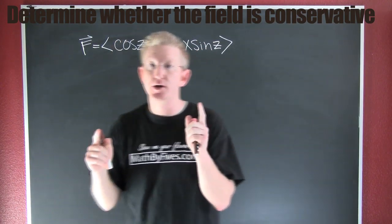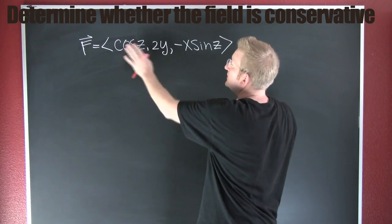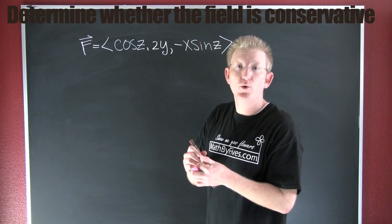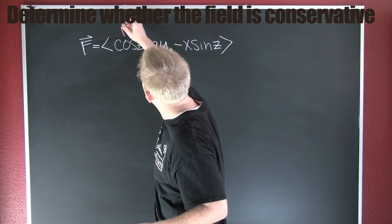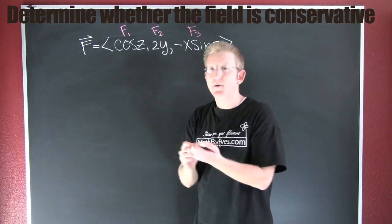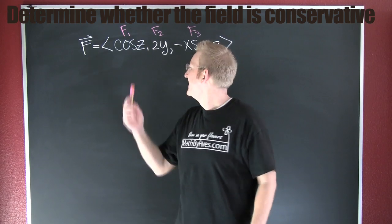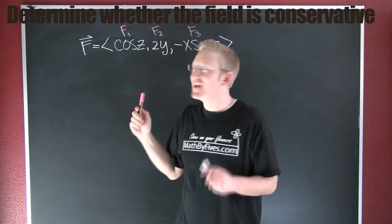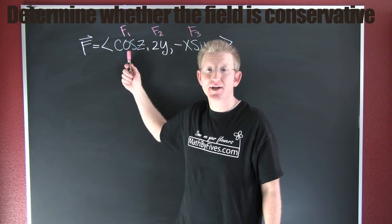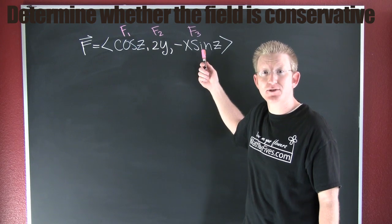What we want to do here is check whether or not this vector field is conservative. If this vector field is conservative, then these components are the gradient of some potential function. So we'll label these as f1, f2, and f3. If this is a gradient field from a potential function, then by Clairaut's theorem the mixed partials are going to be equal — that's what we're actually going to check. If this is the gradient field, then f1 is the partial of the potential function with respect to x, f2 with respect to y, and f3 with respect to z.